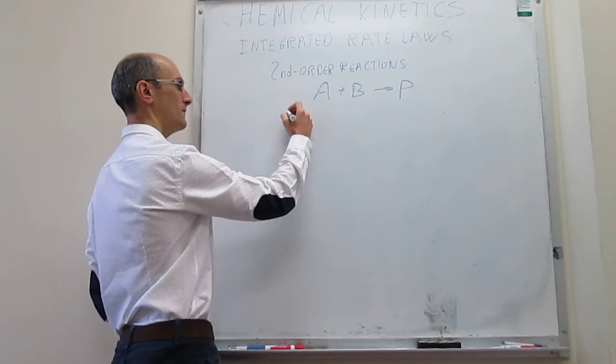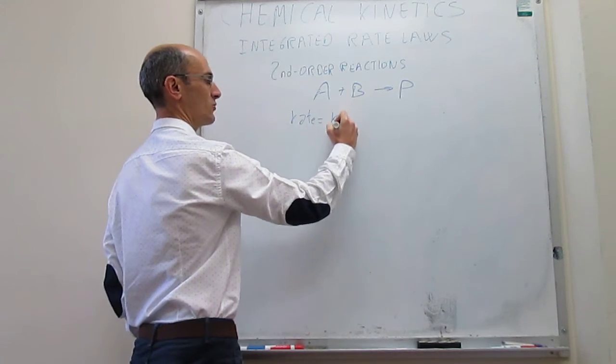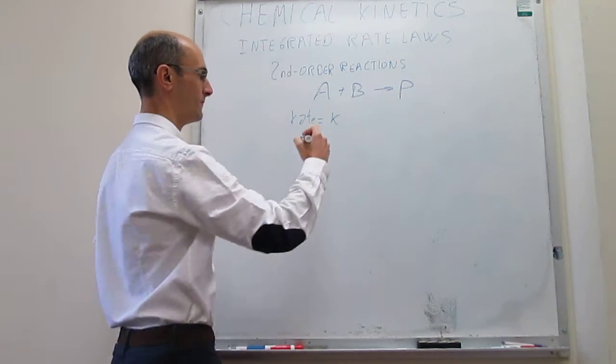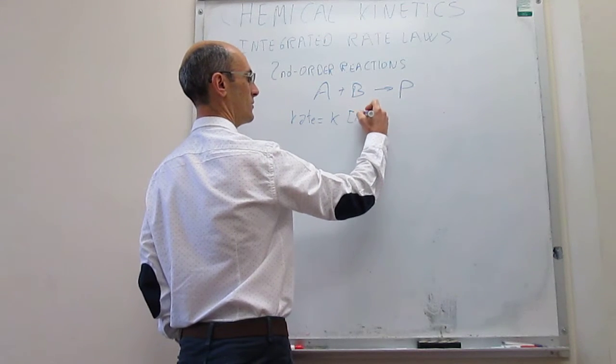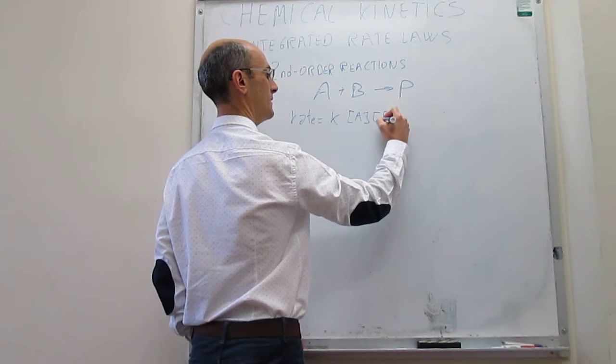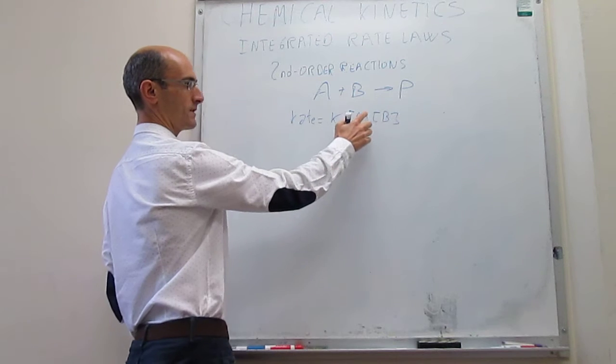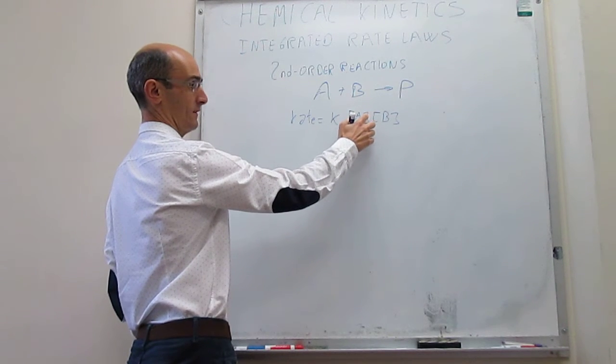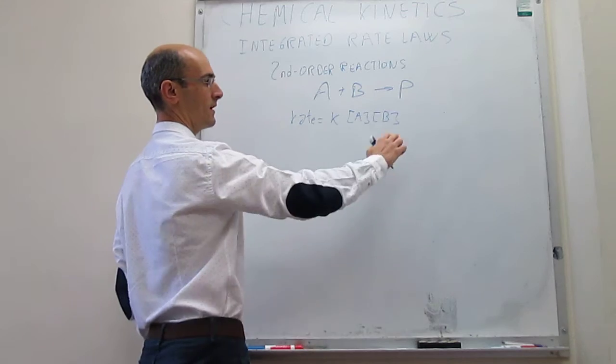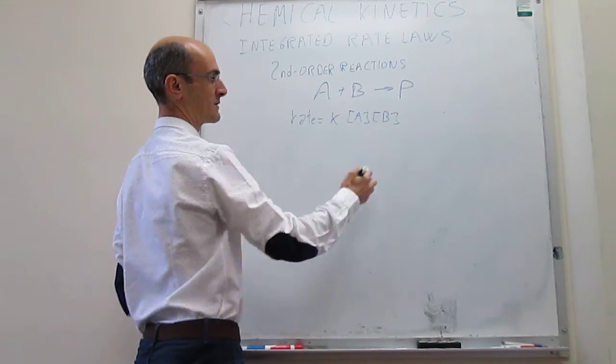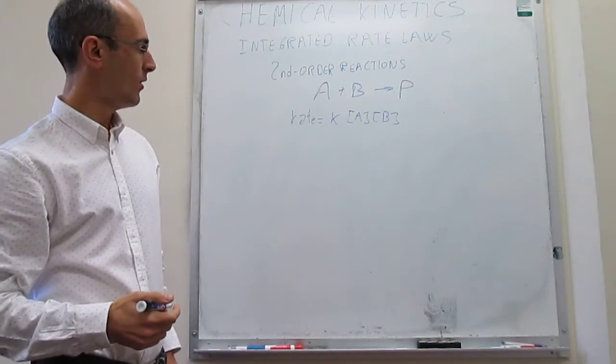When we write the rate law for this particular reaction it's going to be second-order overall and that means you are going to have the following. That will be the rate law in which the rate is first-order with respect to A, first-order with respect to B, and then second-order overall.